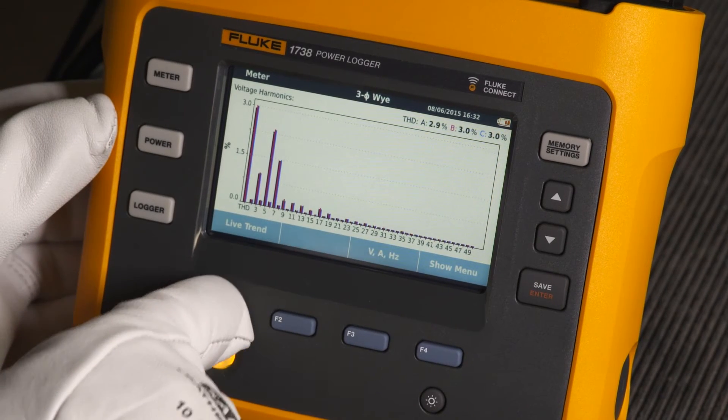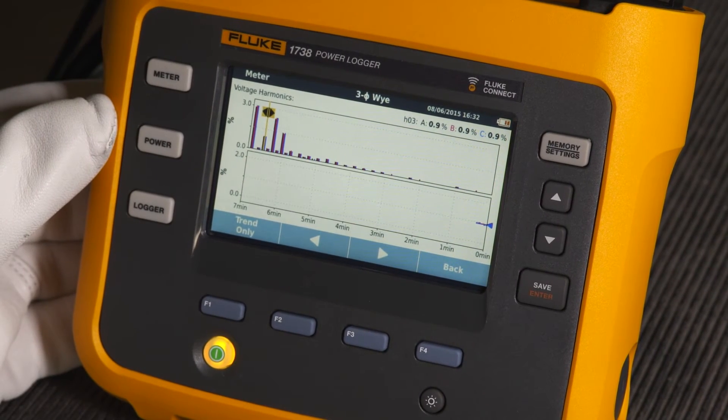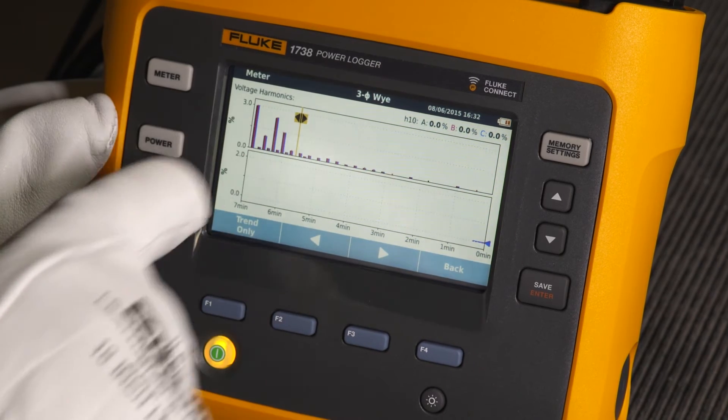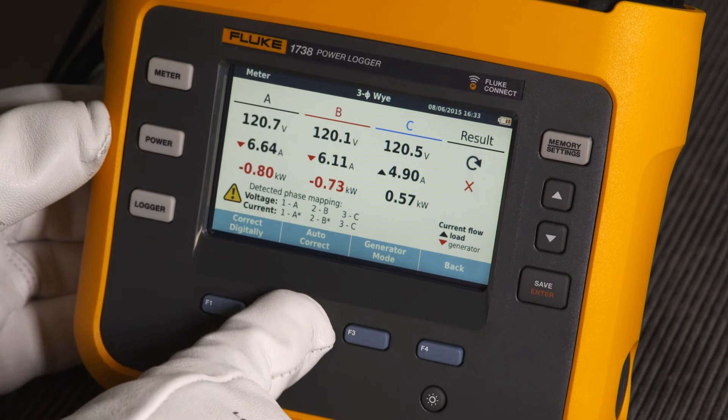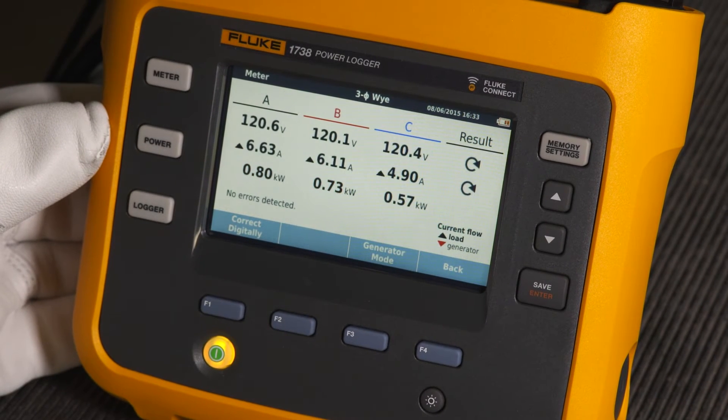An optimized layout and touch screen makes navigating through 50 harmonics simple. And an advanced autocorrect feature eliminates costly errors by digitally verifying and correcting connections.